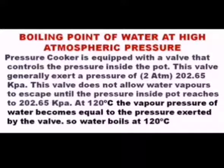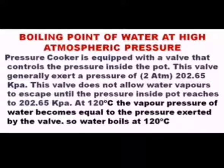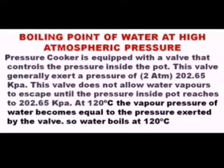The valve does not allow water vapor to escape until the pressure inside the pot reaches 202.65 kilopascals — that is, until the internal pressure equals 2 atm. The vapor pressure of water becomes equal to the pressure exerted by the valve, so water boils at 120 degrees Celsius inside a pressure cooker due to the higher atmospheric pressure.